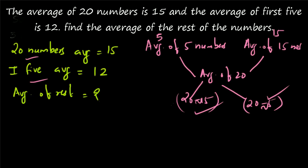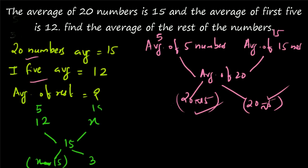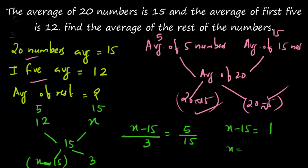From that ratio, you find the average of the rest of the numbers. The average of 5 numbers is 12. Let the average of 15 numbers equal x. The average of 20 numbers is 15. The difference between 15 and 12 is 3. Since x must be greater than 15, you write x minus 15 divided by 3 equals 5 by 15, which gives x minus 15 equals 1, so x equals 16. So 16 is the average of the rest of the numbers.